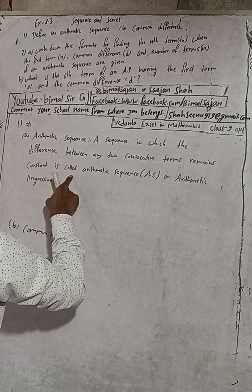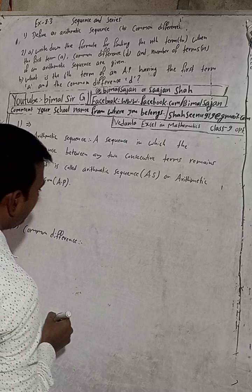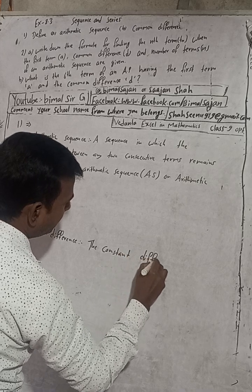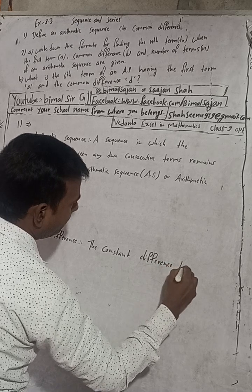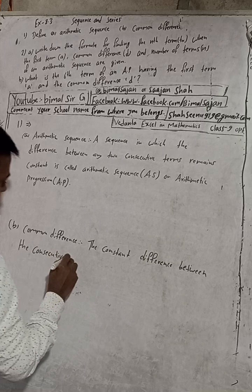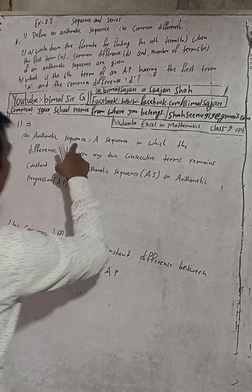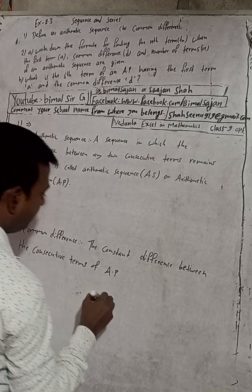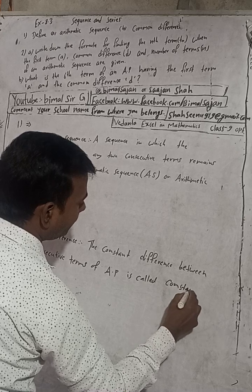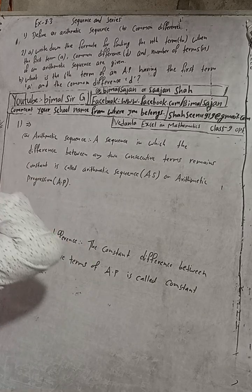A sequence in which the difference between any two consecutive terms remains constant is called arithmetic sequence or arithmetic progression. The shortcut for arithmetic progression is A.P. Now, what is common difference? The constant difference between the consecutive terms of an A.P. is called the common difference.